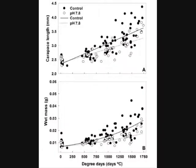This graph depicts the growth of the red king crab in controlled and pH 7.8 water. Graph A is the carapace length and graph B is the wet mass of the crab. The dots represent individual measurements. Because the temperature was not controlled, the conditions the crabs were exposed to are similar to their natural conditions.